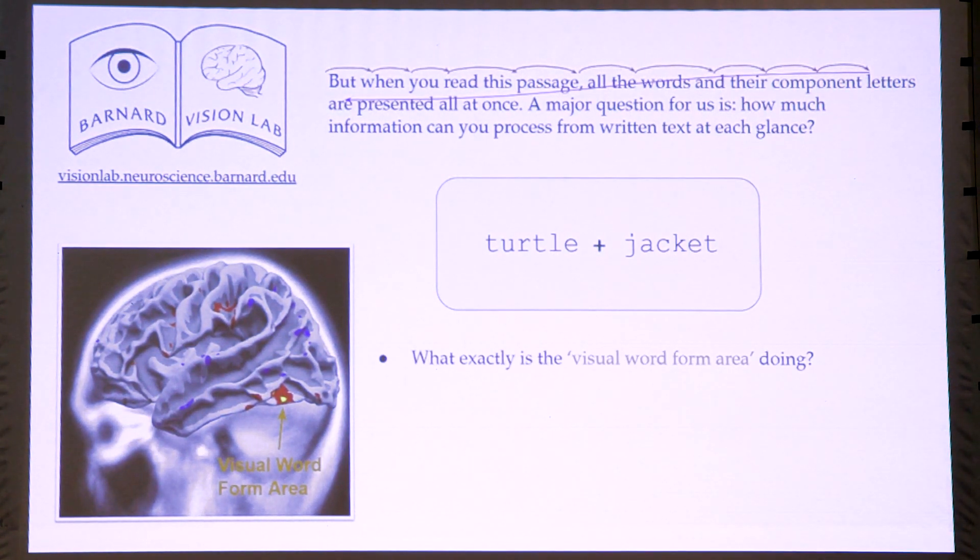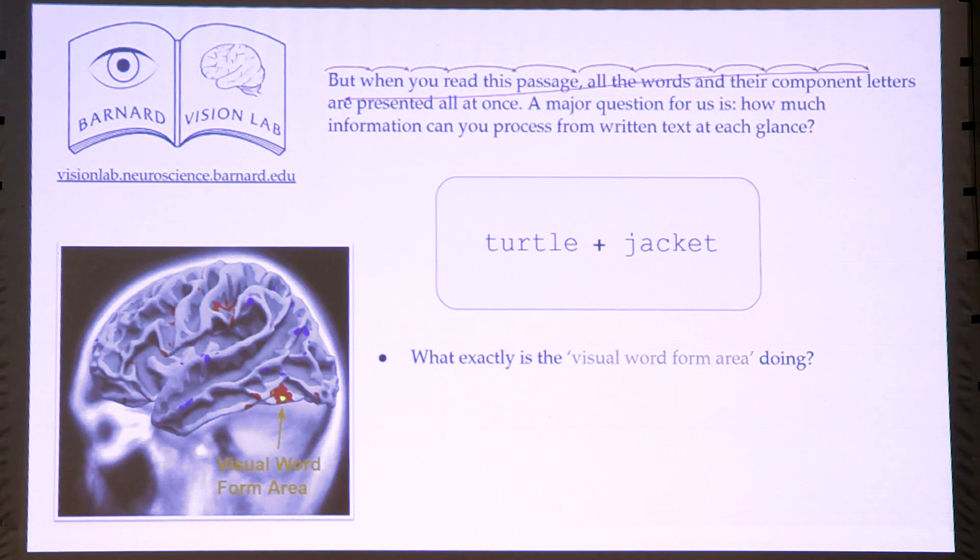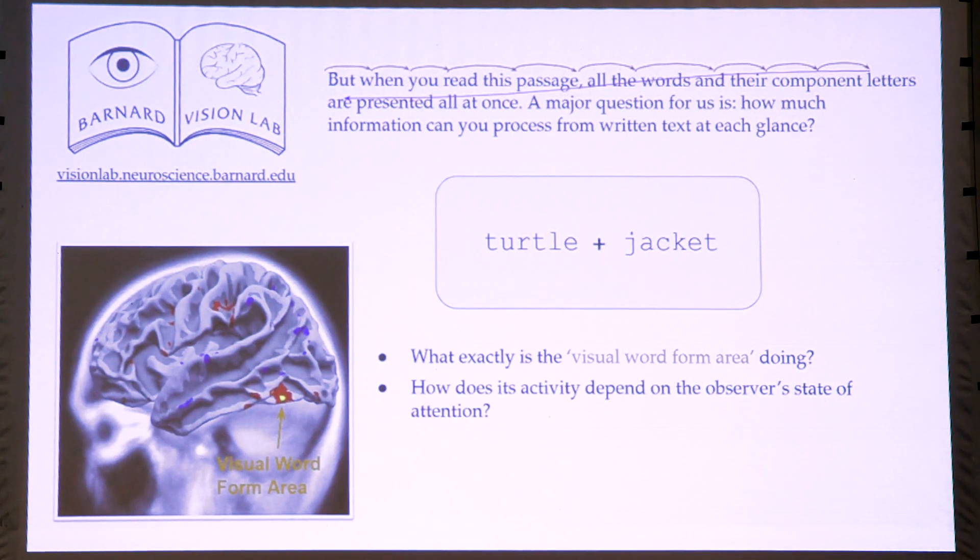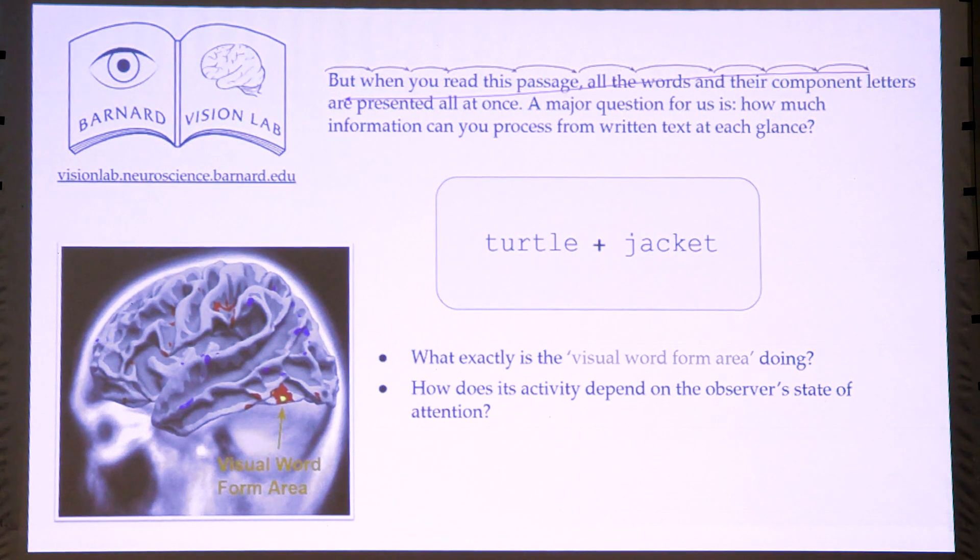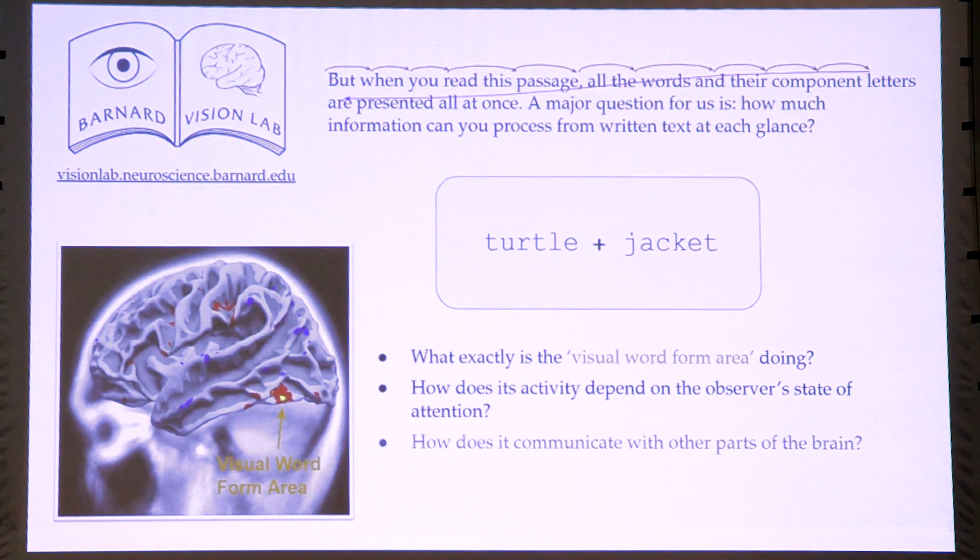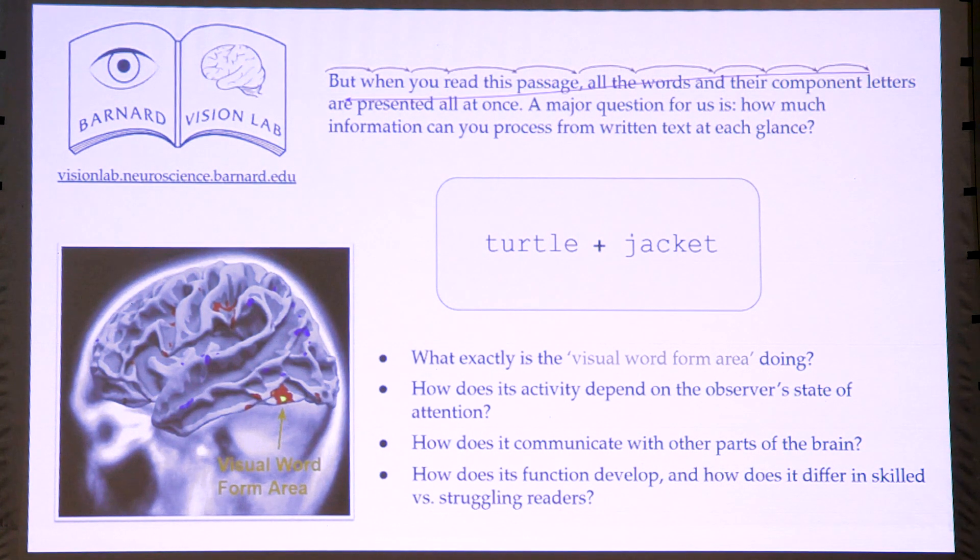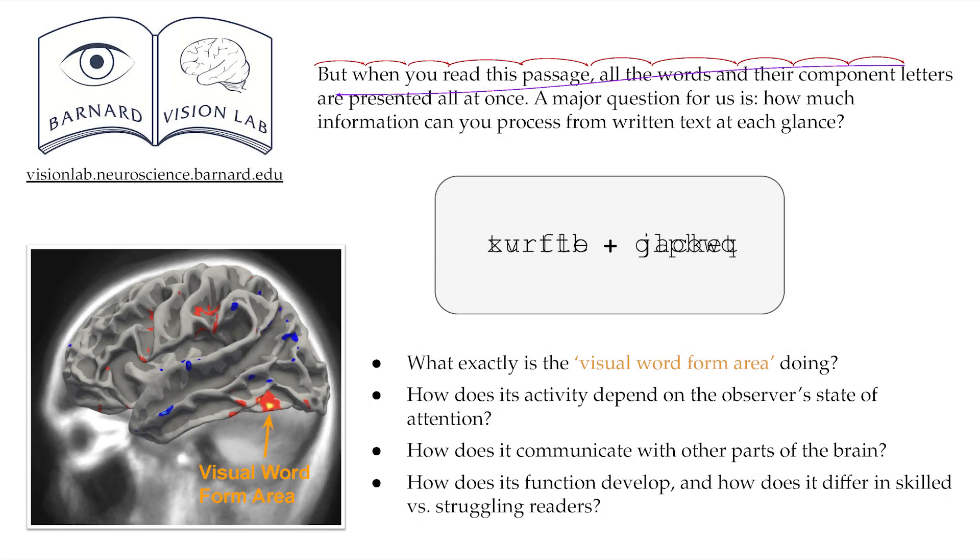And our questions are, what exactly is this area doing? How does its activity depend on the observer's state of attention? What the person is trying to do as they're looking at words? How does it communicate with other parts of the brain? And how does its function develop? And how does it differ between skilled and struggling readers?